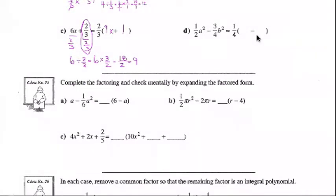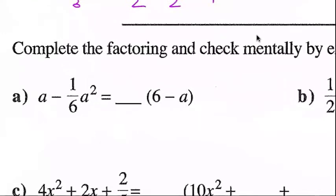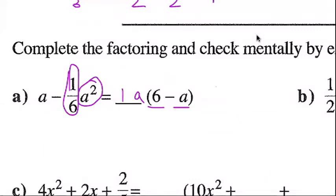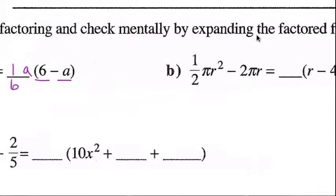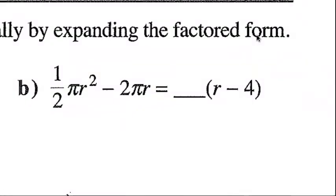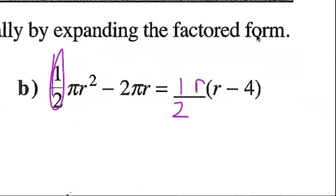Example five: complete the factoring and check mentally by expanding. For question a: −(1/6)a² and we end up with 6 and a inside, which means we factored out an a and a (1/6). For question b: (1/2)πr² became r inside, so we factored out an r and (1/2). You can write it as (1/2)r or equivalently with the fraction written differently — both are perfectly acceptable.